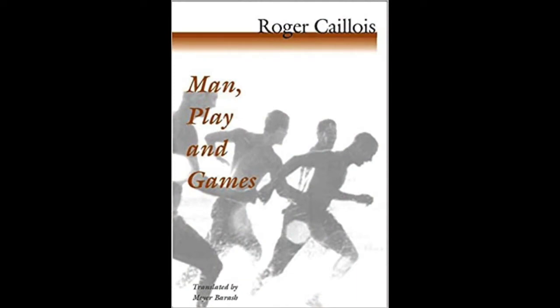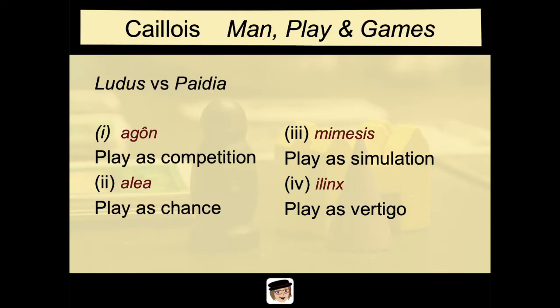Our next theorist is Roger Caillois. Caillois, writing much later than Huizinga, identifies very distinct rubrics between four different categories of gameplay. These categories encompass play as competition, play as chance or gambling, play as simulation, or play as an attempt to experience vertigo. Within each category, he argues there is a continuum between two extremes — the extremes of ludus versus paidia. While paidia is anarchic and capricious play, a sort of carefree or uncontrolled type of play, at the alternate pole of ludus there is a sort of binding of play using arbitrary and imperative rules or conventions.